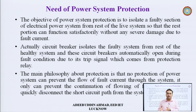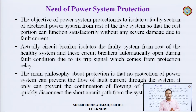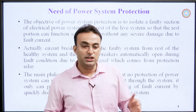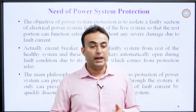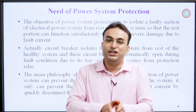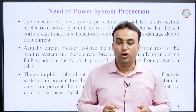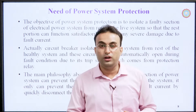The protection relay senses the fault and gives a signal to the circuit breaker, which trips the faulty line to separate it from the healthy line. The main philosophy of protection is that no protection system can prevent the flow of fault current through the system — it can only quickly disconnect the short circuit path. We are not stopping the fault current instantly; rather, we interrupt its continuity by disconnecting the faulty section from the healthy section.